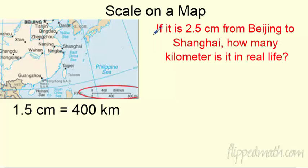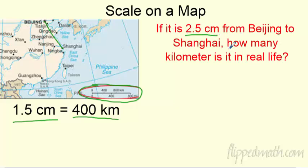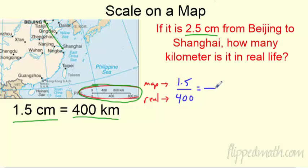How about a map problem? Maps always give you some kind of key. Here the key says 1.5 centimeters on the map equals 400 kilometers in real life. If the distance from Beijing to Shanghai measures 2.5 centimeters on the map, how far is that in real life? I set up a proportion: 1.5 centimeters over 400 kilometers equals 2.5 centimeters over the unknown real distance. Map measurements go on top, real life on bottom.